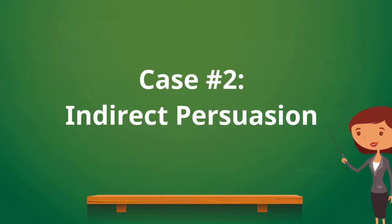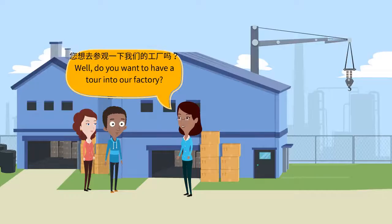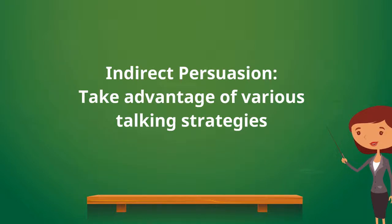Here is an example that uses interrogative sentences to persuade: 你想去参观一下我们的工厂吗？ In fact, many indirect persuasions take advantage of various talking strategies. To be more persuasive, one often combines direct and indirect persuasions in their talking. The goal is to make their persuasions more acceptable. Let me show you some common strategies.